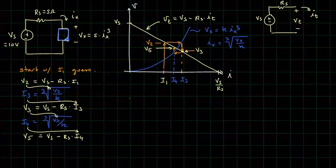We'll find the following values. If we start with I1 equal to 0.5 amps, we'll find a V2 is equal to 7.5 volts. We'll find an I3 is equal to 1.145 volts.